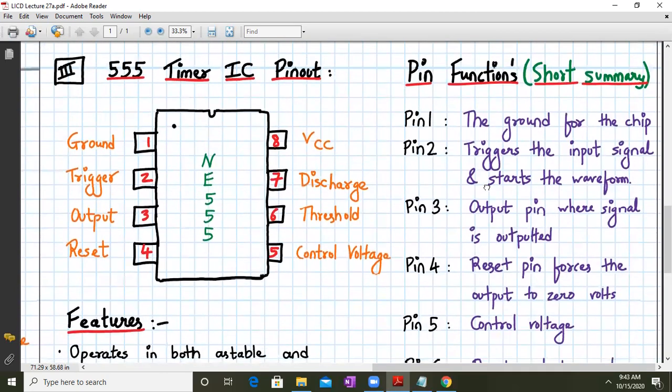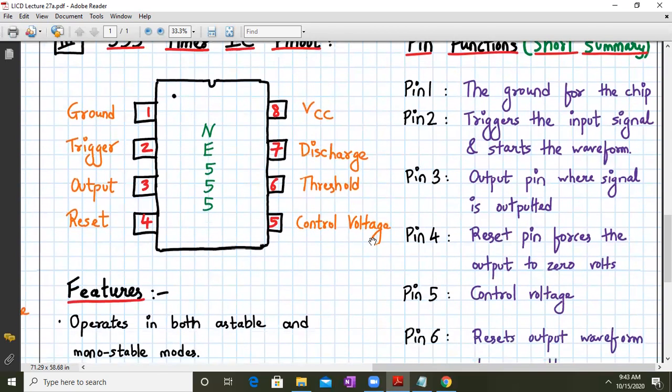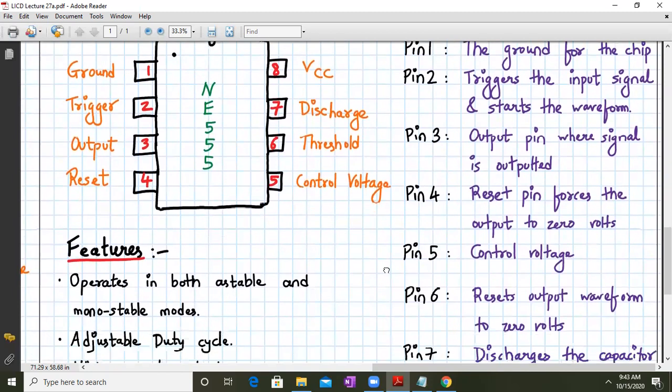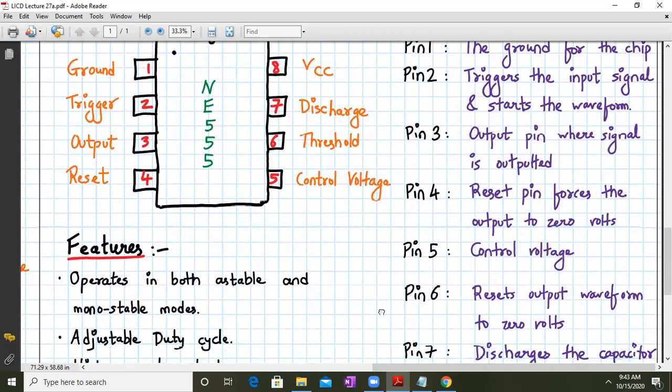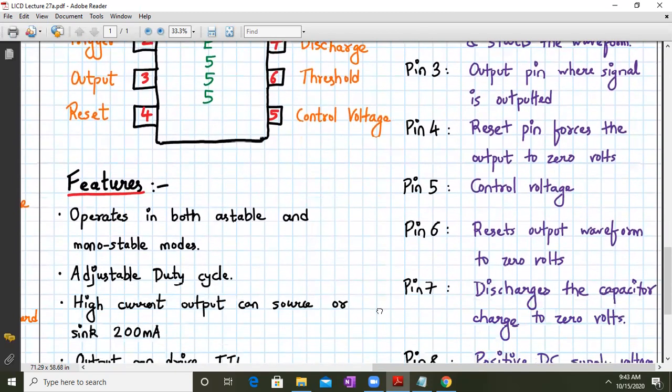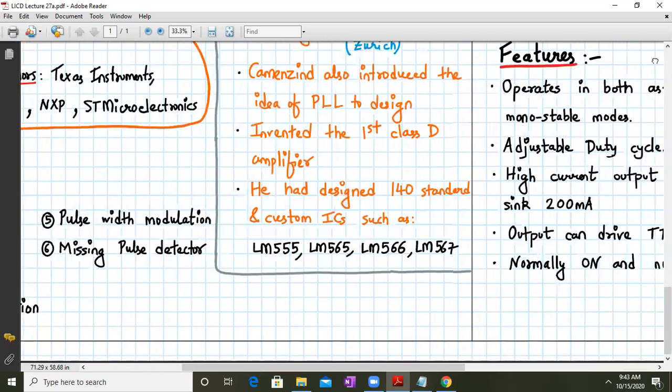So this IC 555 timer integrated circuit is capable of sourcing or sinking current of about 200 milli amperes. Here, its output that is pin number six can drive TTL transistor-transistor logic. And it is normally on and normally off output basically. So let us describe the pin function. So pin number one is the ground for the chip. Pin number two triggers the input signal and starts the waveform. Pin number three is the output pin where the signal is outputted. Pin number four is the reset pin which forces the output to zero volts. Pin number five is the control voltage. Pin number six resets the output waveform to zero volts. Pin number seven is discharge. It discharges the capacitor charge to zero volts, externally connected capacitor. And pin number eight is the positive DC supply voltage.